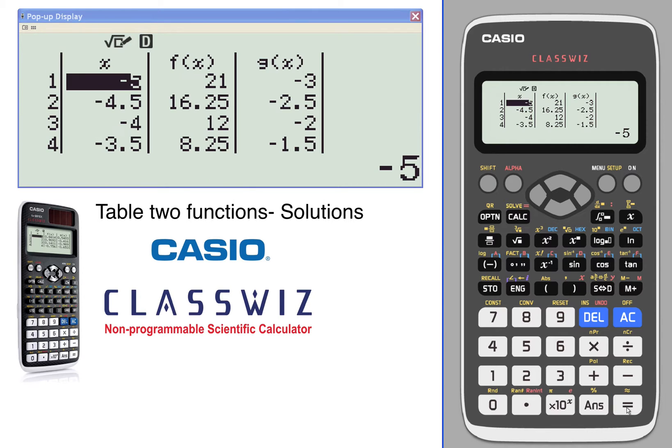We'll set our table range of negative five to five and steps of a half. What we're looking for is a solution, so we're looking for a place where the x value is the same, which will always be the same, but the y value or the f(x) value and g(x) value will both be the same.